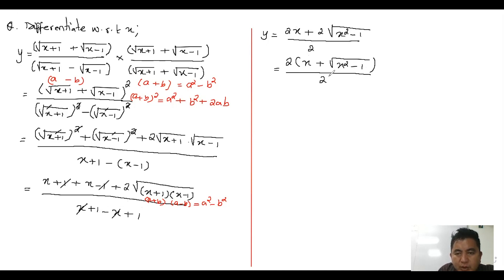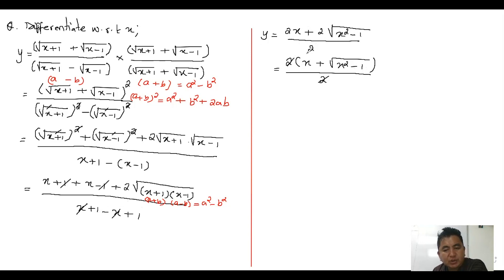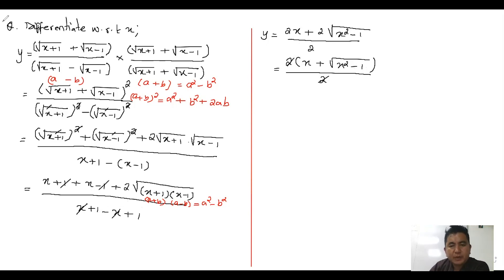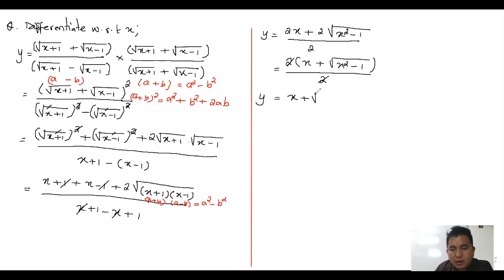Now from the numerator, take two outside: two times quantity x plus root of x squared minus one, whole divided by two. But be careful — you cannot cancel these two directly here without first taking common outside, as that is mathematically wrong. After proper cancellation, we have y is equivalent to x plus square root of x squared minus one.